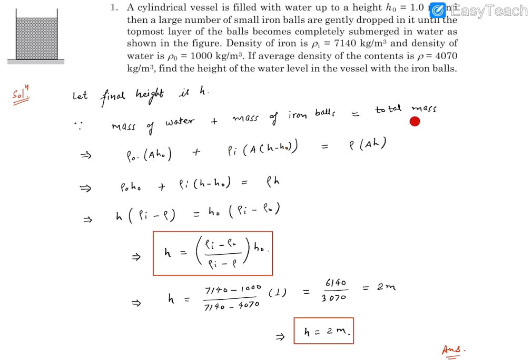This must equal the total mass of these two put together. That means average density times the total volume. Average density is ρ, and total volume is A H because H is the final height. This will give us the value of H.